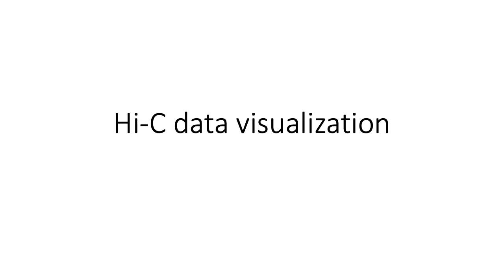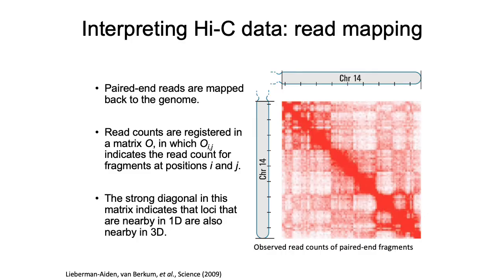Let's talk specifically about visualizing data generated from a Hi-C assay. Once you sequence your chimeric reads and align the ends of those chimeric reads back to the original genome to figure out which two loci were interacting to produce the chimeric read, you can figure out which pair of loci your reads came from and create a table — represented by this heatmap — where the i-th row and j-th column store the number of reads representing an interaction between locus i and locus j.